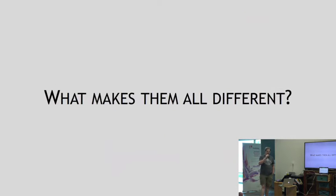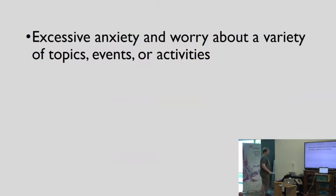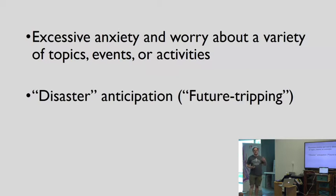So before we talk about them as a group, I want to go through them and talk about what makes them all a little different. Generalized anxiety disorder is characterized by excessive anxiety and worry about a variety of topics, events, or activities. It's general. It isn't about any specific trigger or about any specific thing. In fact, it's often about disaster anticipation, and by disaster I mean anything that can go wrong. I've heard it termed future tripping, and I love that term, because that's exactly what my brain does.